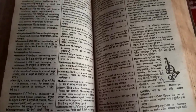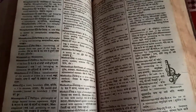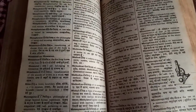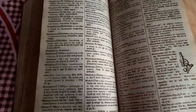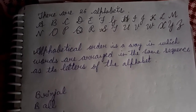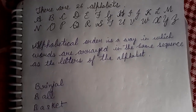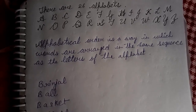Good morning children. Today we will be learning about the chapter named 'Words in Alphabetical Order.' This chapter is related to how we find words from the dictionary. There are 26 alphabets from A to Z. Alphabetical order is a way in which words are arranged in the same sequence as the letters of the alphabet. All the letters must be arranged according to alphabetical order.